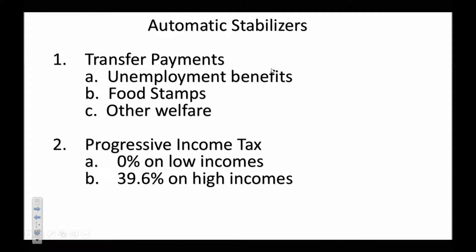So let's talk about what the automatic stabilizers are. They are transfer payments and our progressive tax system. Those are the automatic stabilizers.